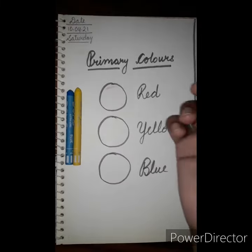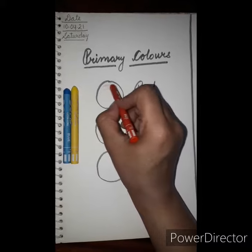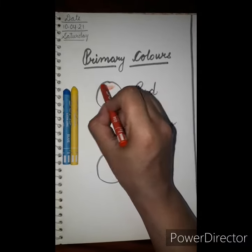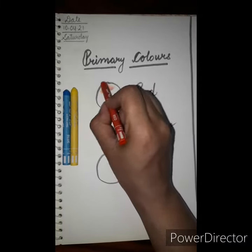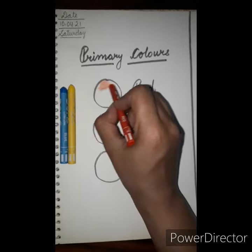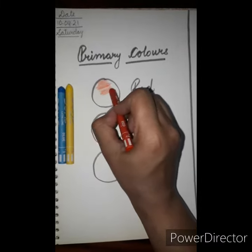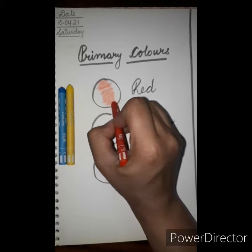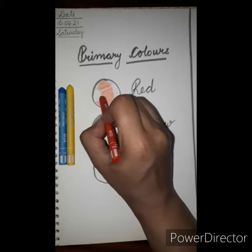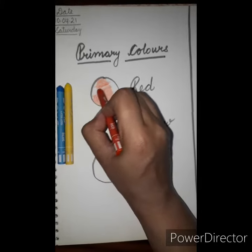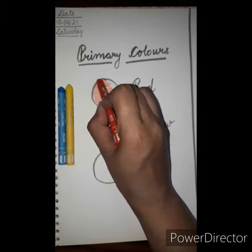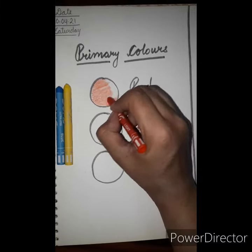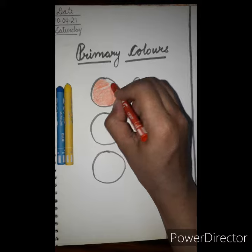So we start with red. So children, you also have to do it the same, and also in the same direction. Look how ma'am is doing so that the color will not come outside the picture. Okay children, like this — you also have to do it like this.